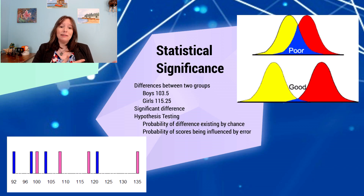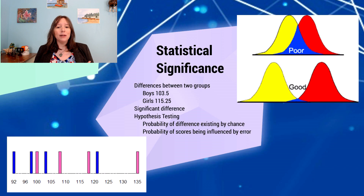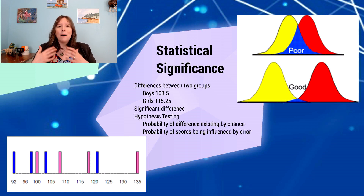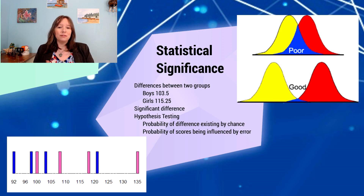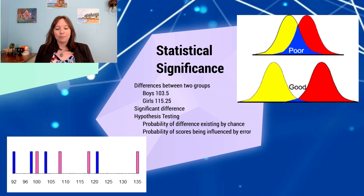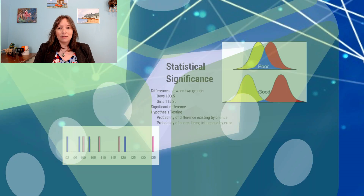When we go back to hypothesis testing, we're interested in the probability that differences exist by chance, or that they exist based on a manipulation of the independent variable. We want to rule out that results are due to chance or error. And so that's where we're going with inferential statistics.